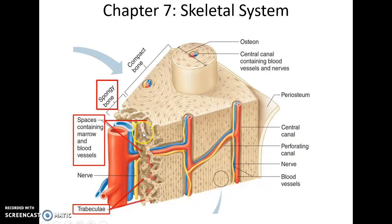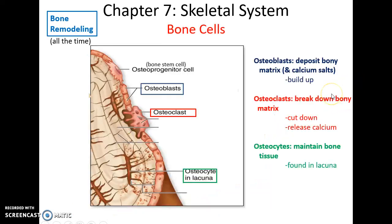The spongy bone's little girders are referred to as trabeculae — trabecula for one, trabeculi for many.